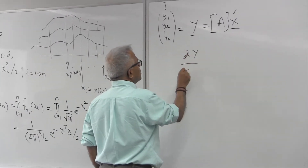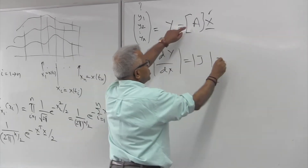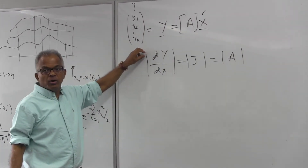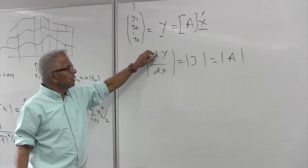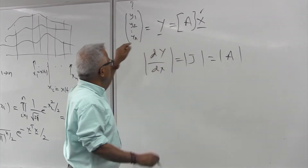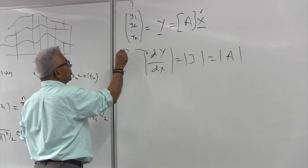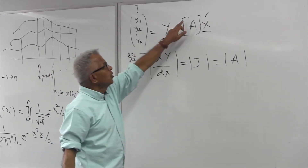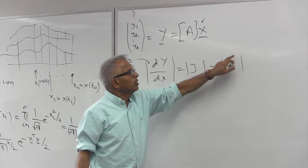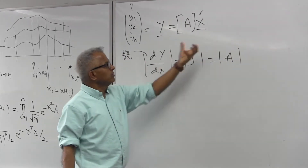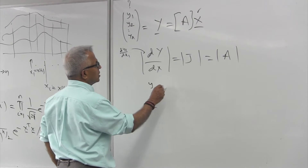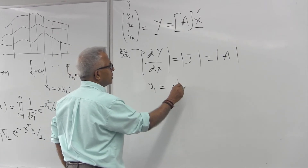We can use the Jacobian technique. The Jacobian matrix dy/dx is just A. The matrix of partial derivatives dy_i/dx_j gives A_ij. For a given y, there is one solution: x = A^{-1} y. The determinant of the Jacobian is just the determinant of A.